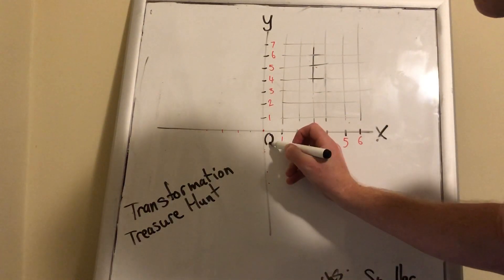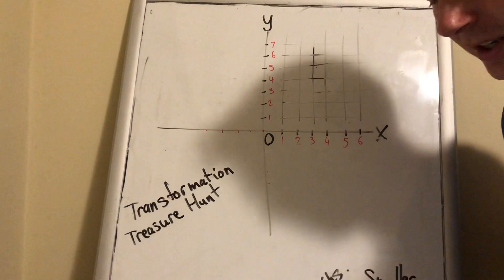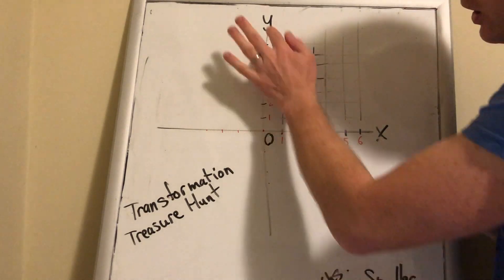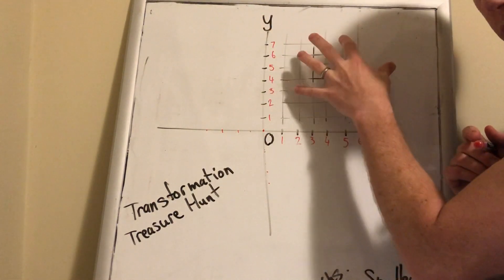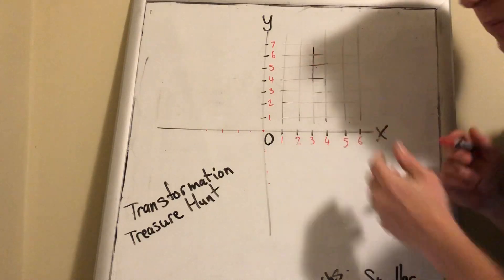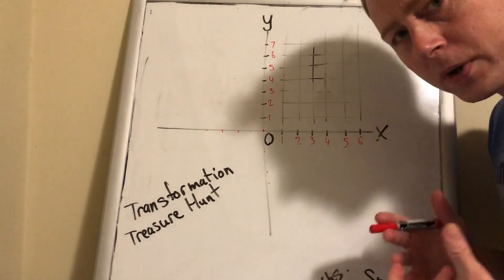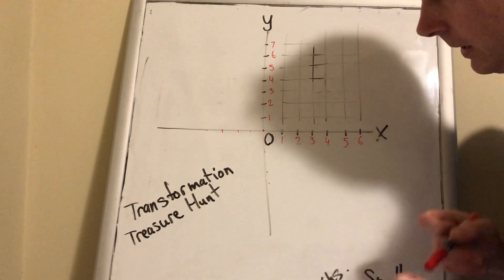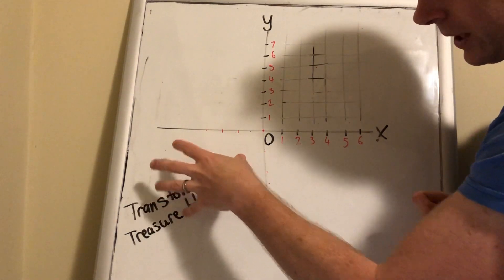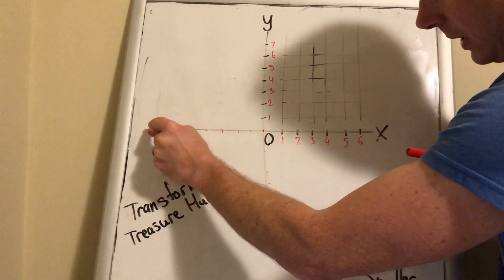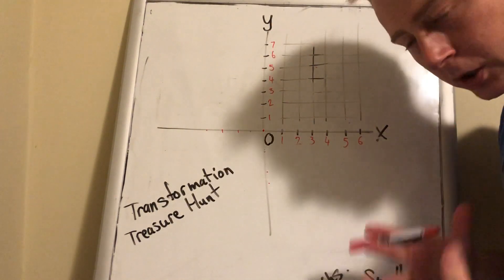If you've ever seen coordinates before and done any work with mapping, you might have seen just the first quarter of the Cartesian plane. It actually has three other sections, all of which use negative numbers. This quarter here uses negative numbers on both the x-axis and the y-axis, and I'm going to go into that now.